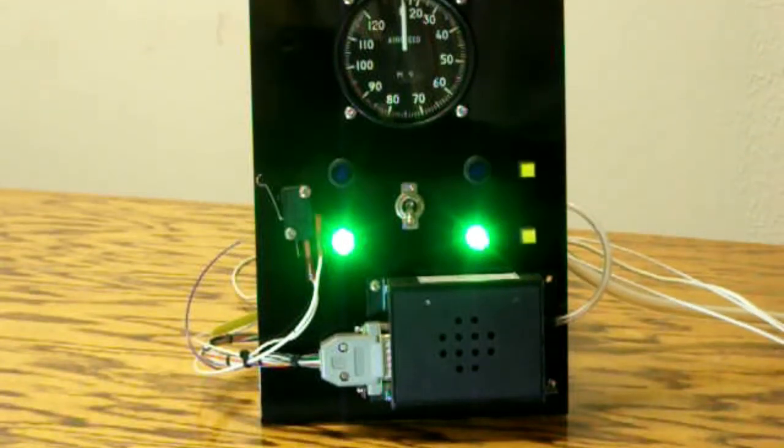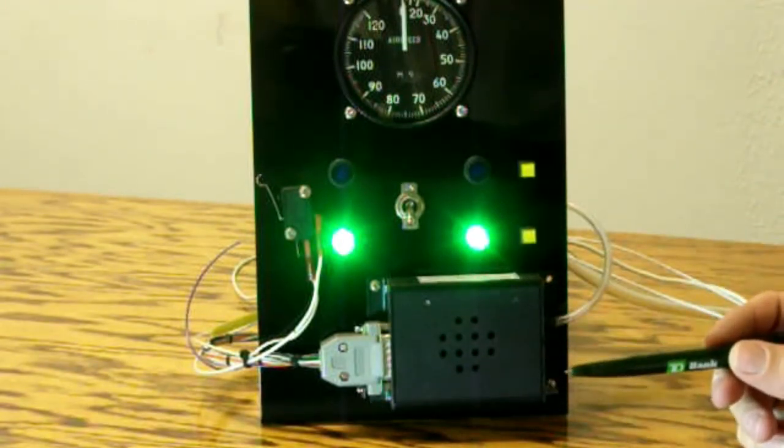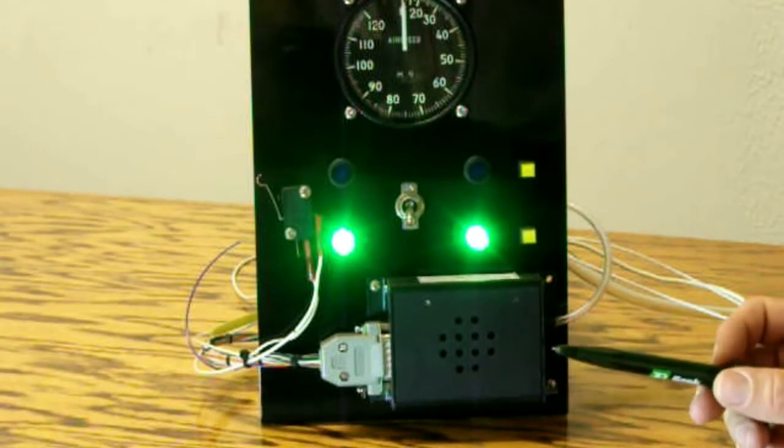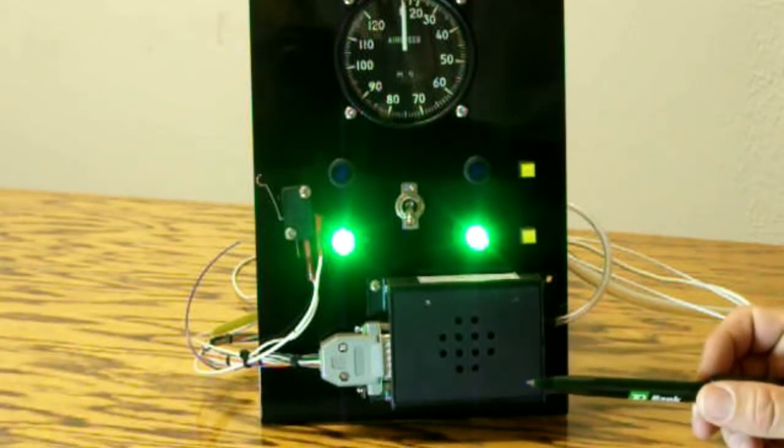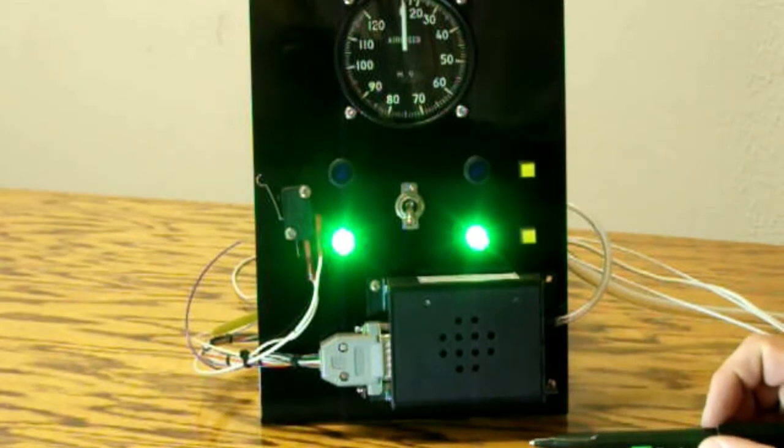This is a demonstration of the ACI gear warning system. This is the actual ACI module. It measures just 4 and a quarter inches in length, 3 inches in width, and 1 and a quarter inches in height, and weighs just a few ounces, so it can be mounted virtually anywhere in the aircraft.